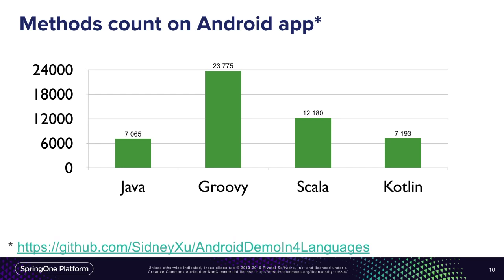This diagram shows the method counts on Android applications. On mobile we have limited resources, and there is a limitation in Android about the number of methods. With very dynamic languages like Groovy, the bytecode generated contains a lot of classes and a lot of methods — you can see the number of methods in Groovy is very high. Scala is a little bit better. And Kotlin is almost at the same level as Java. This number of methods is after using ProGuard — after removing unused code — basically what you should get in production. That's also why Kotlin is successful in the Android world.